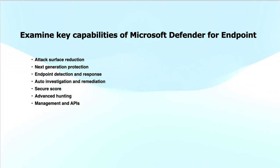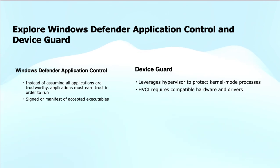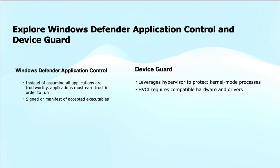Now let's talk about Windows Defender Application Control and Device Guard. First, WDAC — Windows Defender Application Control — is a security feature that helps protect your Windows devices by ensuring that only trusted applications can run on them. Instead of assuming all applications are safe, WDAC enforces a trust model where applications must prove their trustworthiness before they are allowed to execute. Applications must be either digitally signed or include an acceptable manifest to be allowed to run. WDAC ensures that only trusted, signed executables can be executed, reducing the risk of running malicious or unapproved software.